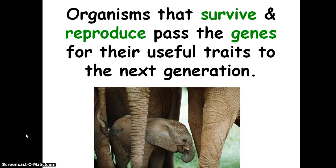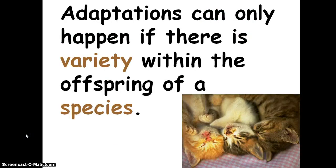Organisms that survive and reproduce pass the genes for their useful traits to the next generation. Genes are sections of DNA that come from your parents, and if your parents were successful in their environment and got everything they needed to survive, they had the chance to reproduce where other animals weren't successful and died off.